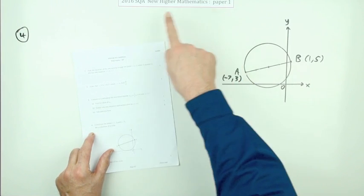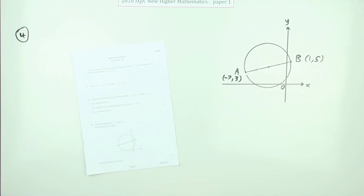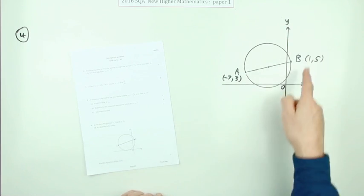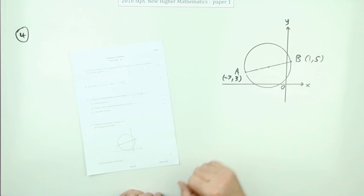Question four from paper one of the 2016 New Higher Maths. Three mark question on a circle, and there's a diagram. It always helps with circle questions. We've got a diagram to look at.